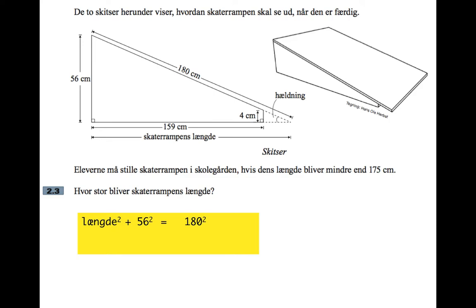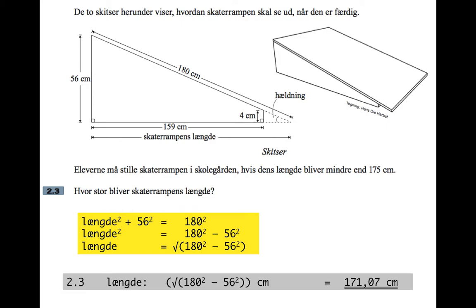The two shortest sides squared add up to the longest side squared. So the thing we're looking for, the length squared plus 56 squared makes 180 squared. From that we can figure out what the length is. We'll take away 56 squared from both sides. So the length squared is 180 squared minus 56 squared. The length itself is the square root of that, and when you do that, it comes to 171 and a bit.